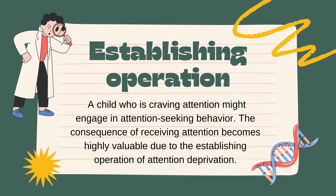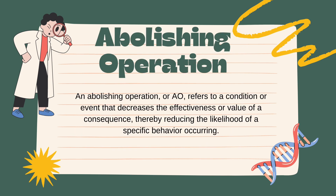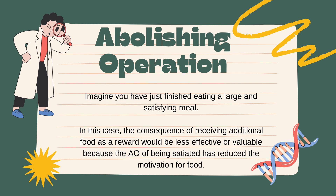The next term is AO — abolishing operation. An abolishing operation refers to a condition or event that decreases the effectiveness or value of a consequence, thereby reducing the likelihood of a specific behavior occurring. For example, imagine you have just finished eating a large and satisfying meal. The consequence of receiving additional food as a reward would be less effective because the AO of being satiated has reduced the motivation for food. Recognizing abolishing operations allows us to understand why certain consequences may lose their effectiveness and to find alternative strategies to maintain motivation.